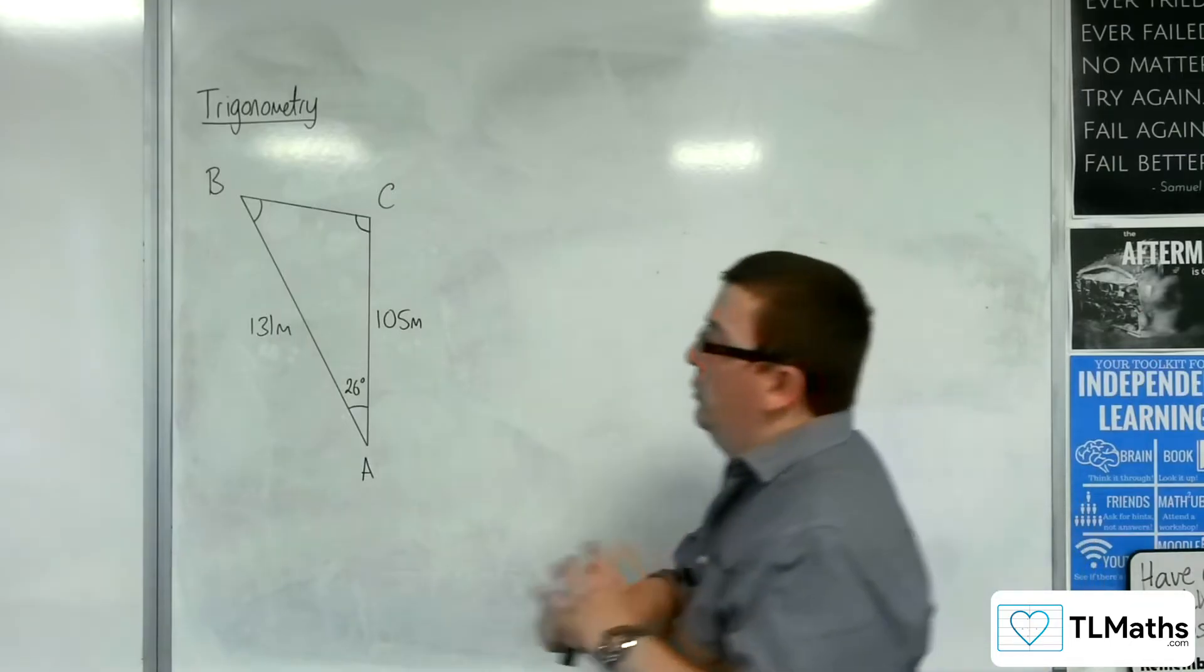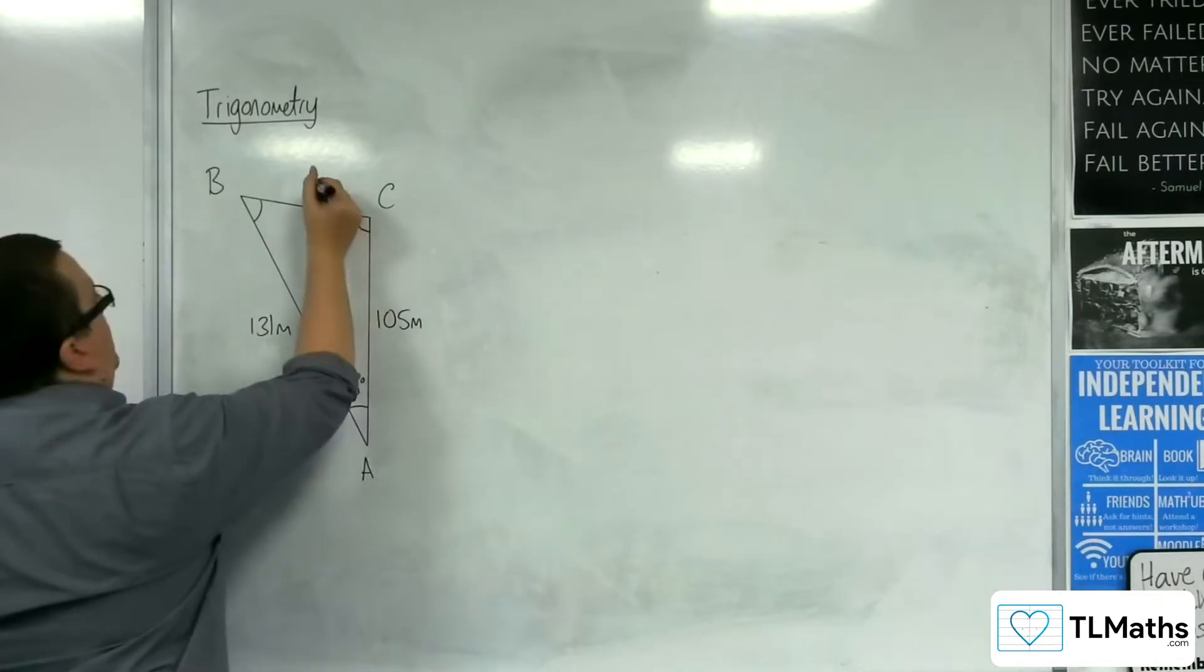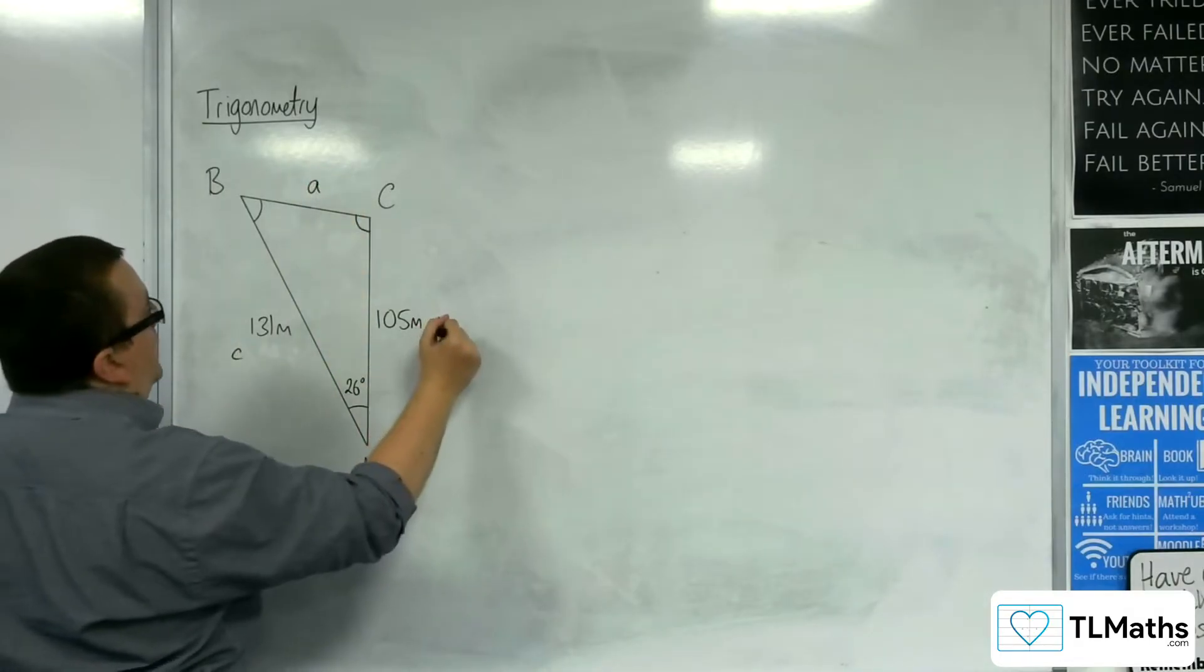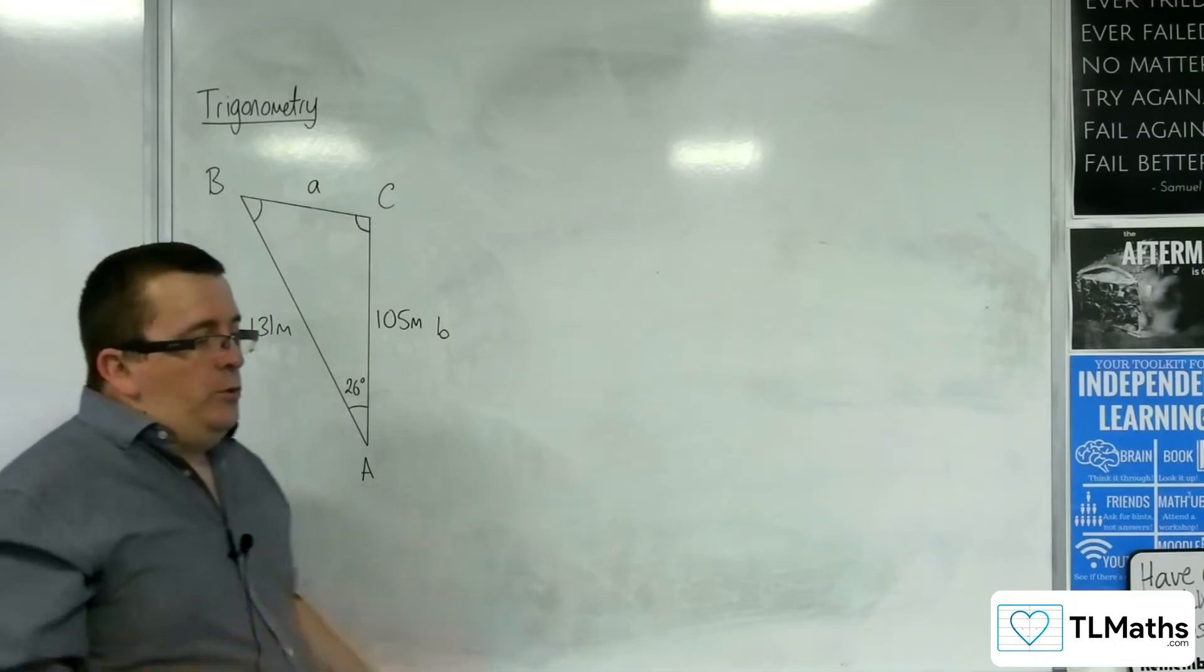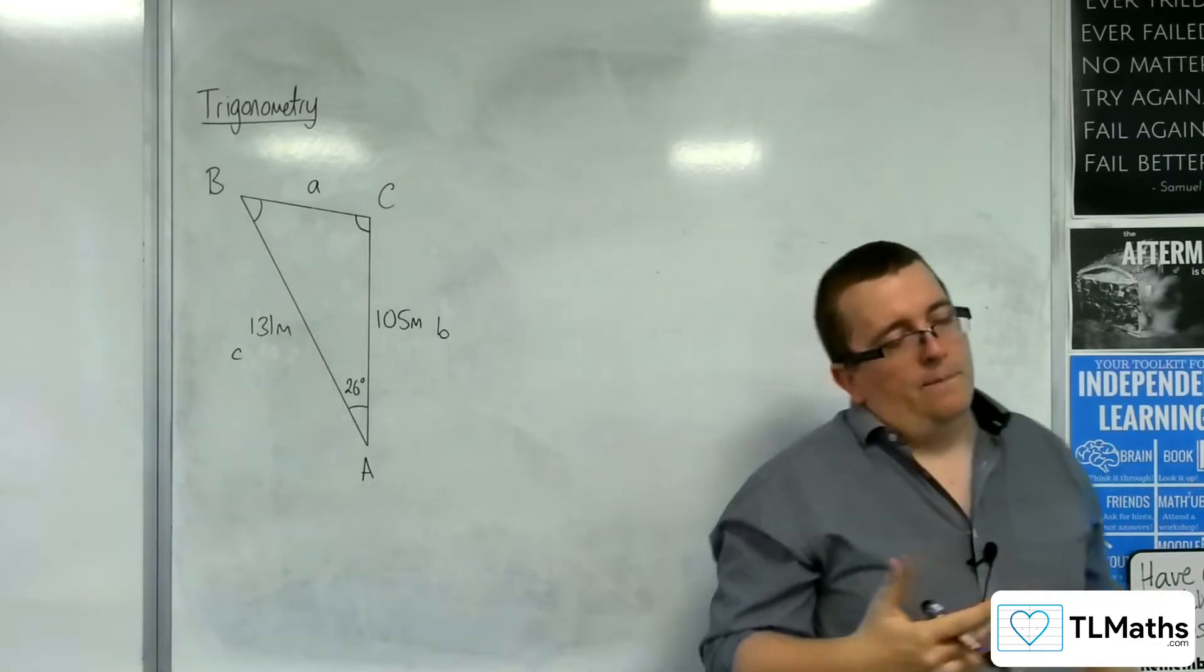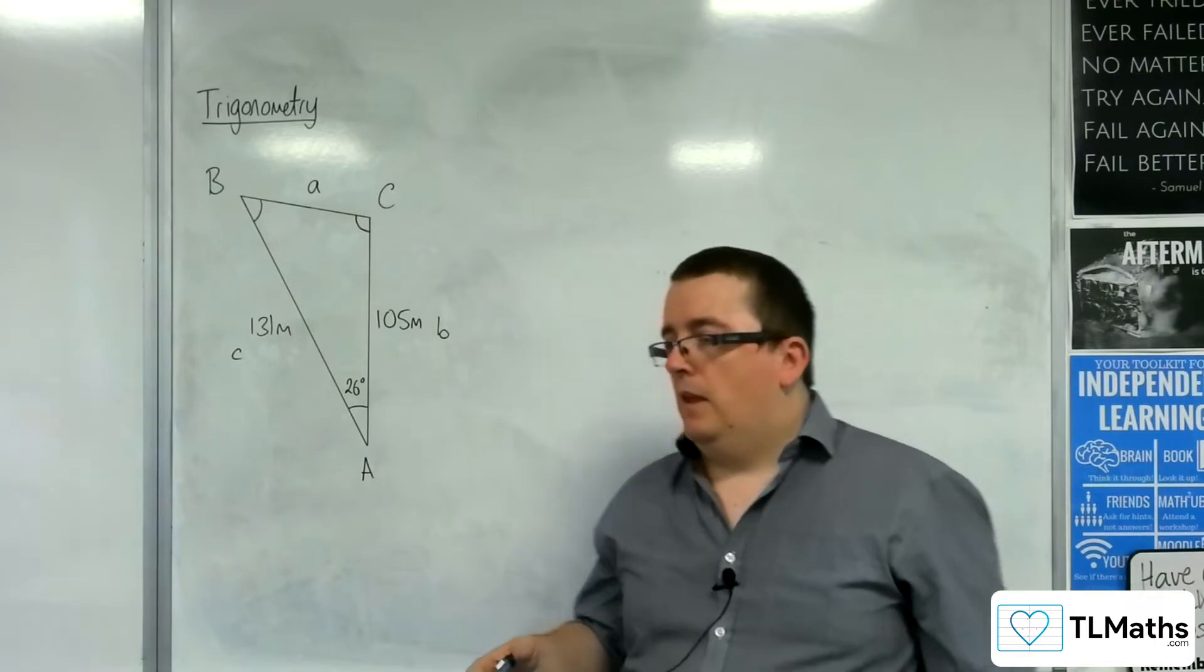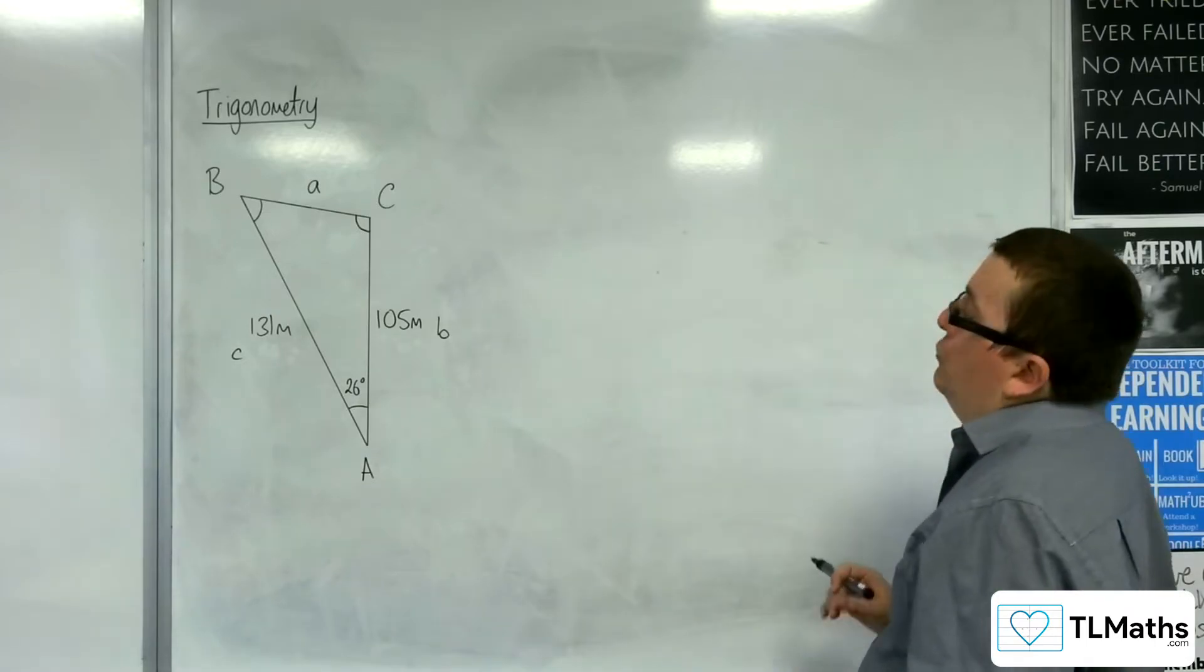First thing I'm going to do is just label the sides. I'll call that lowercase a, because it's opposite capital A, lowercase c, lowercase b. What I want to do with this example is really show you some of the pitfalls. One pitfall in particular, really.